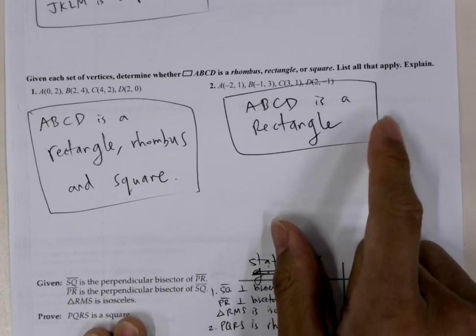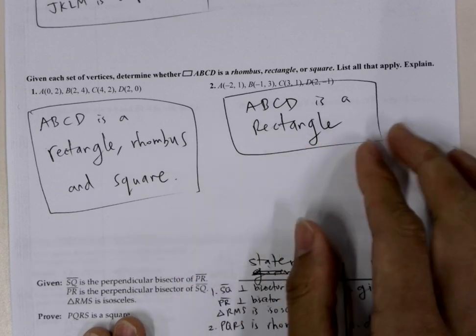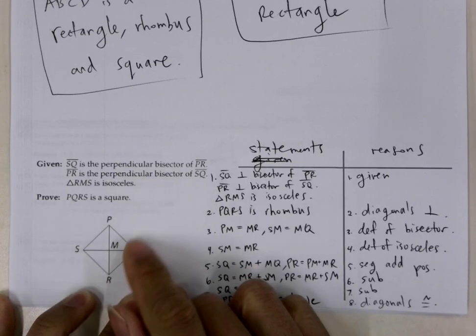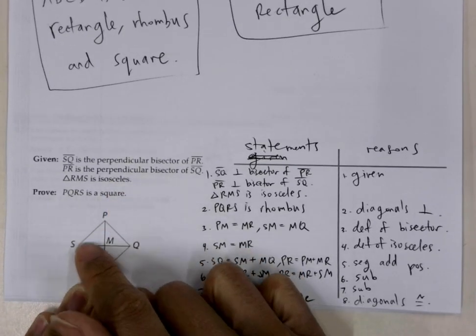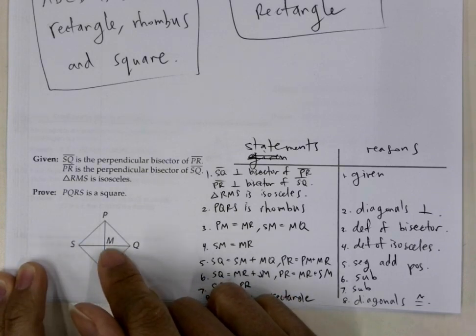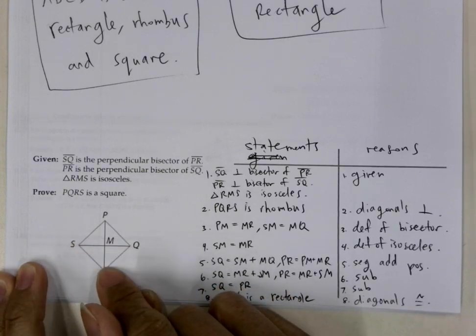Over here, we showed that it's a rectangle by proving that the diagonals are congruent. Now we have this proof, and in the proof, we have that SQ is the perpendicular bisector to PR, and we also have that this triangle RMS is isosceles.